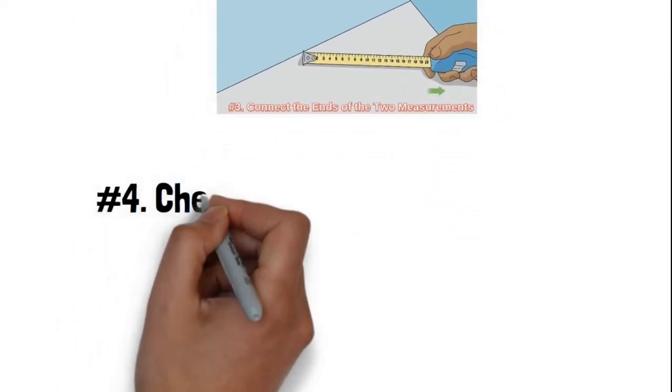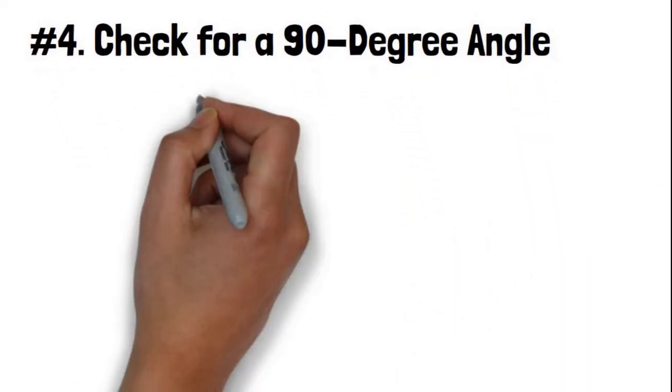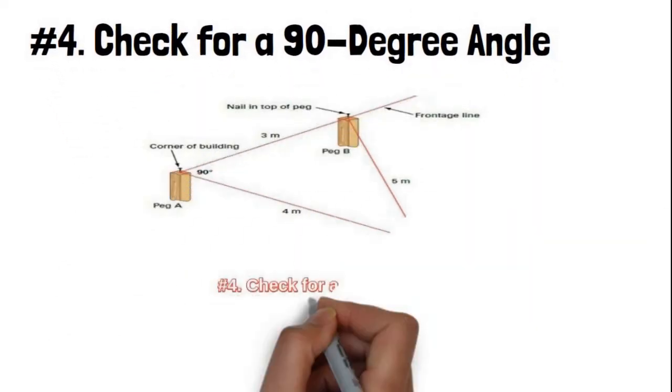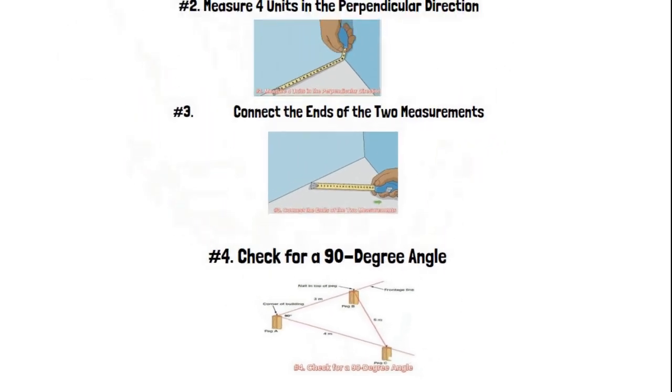Step 4: Check for a 90-degree angle. If the corner is perfectly square, the length of the line connecting the two endpoints should measure exactly five units. This ensures that the triangle is a 3-4-5 right-angled triangle. If the measurement is not five units, it indicates that the corner is not a perfect right angle, and adjustments should be made until it is correct.